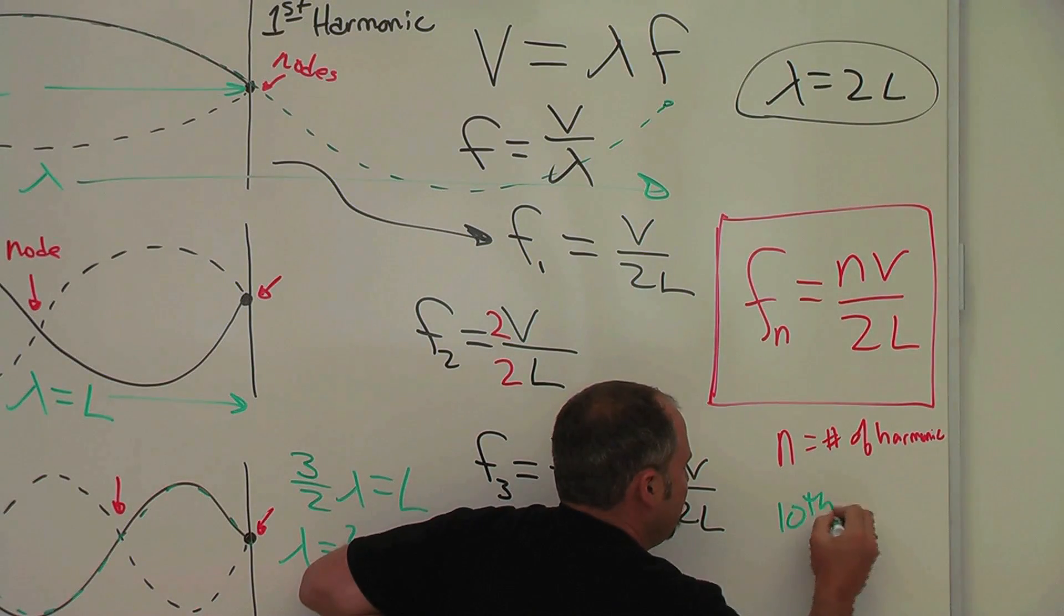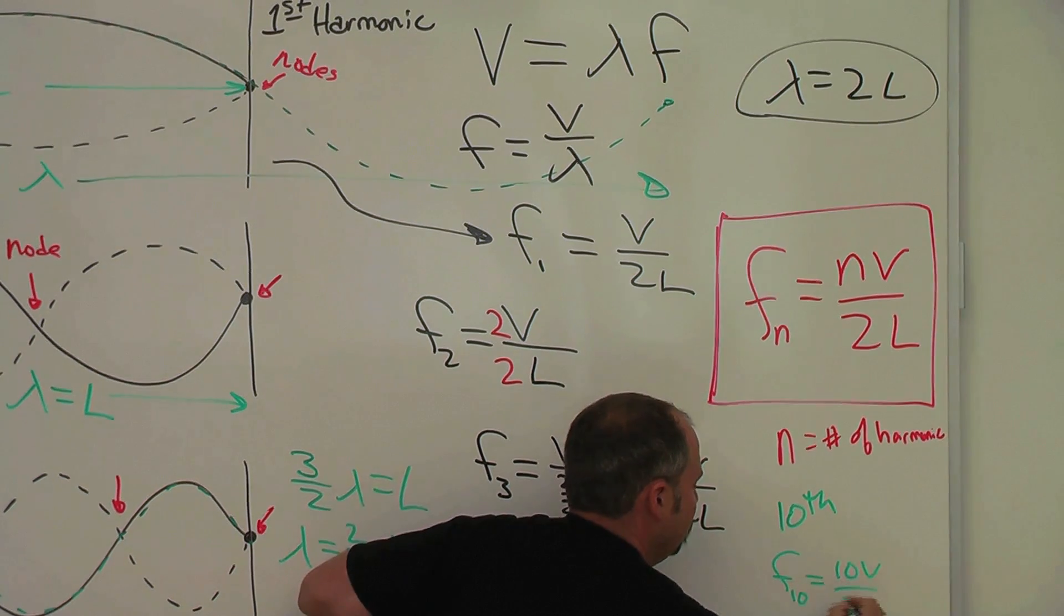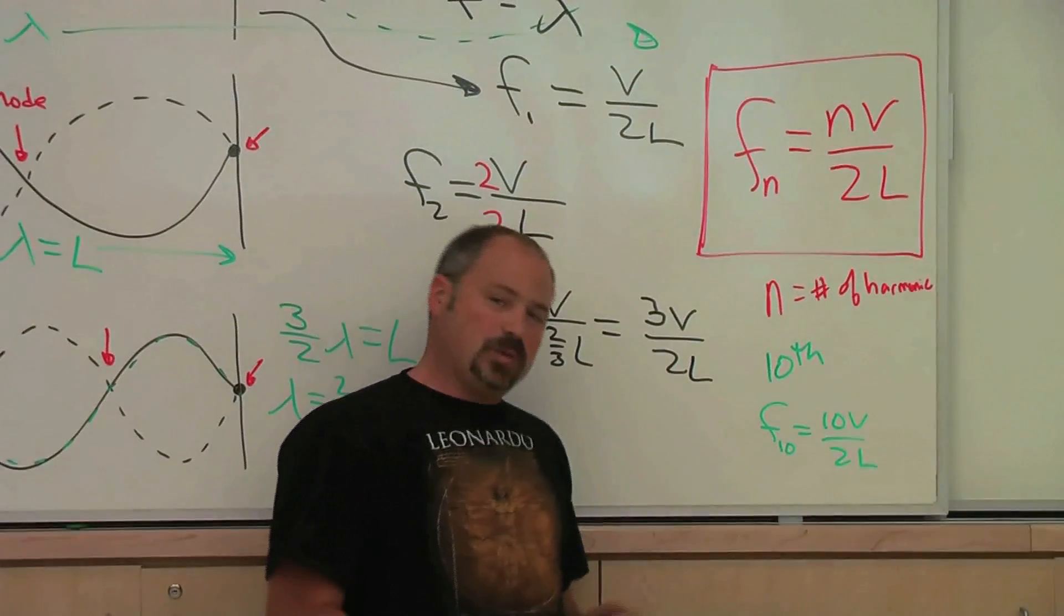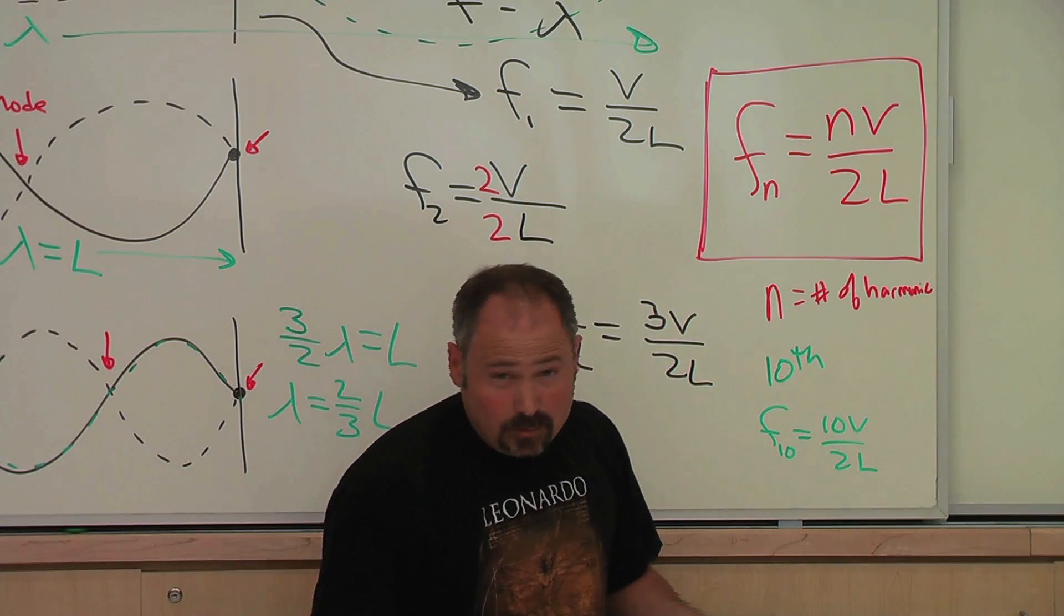So for the tenth harmonic, we would just get F10 equals 10V over 2L. Plug in the speed of the wavelength of the string, plug in the length of the string, and you know the frequency of the tenth harmonic.